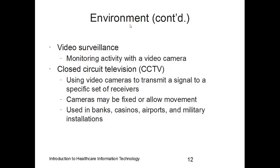When it comes to video surveillance, you use video cameras to monitor activity. A good example is closed circuit television, or CCTV, where a video camera transmits a signal to a specific set of receivers. These cameras can be either fixed or able to move, and are commonly used in military installations, banks, casinos, and airports.